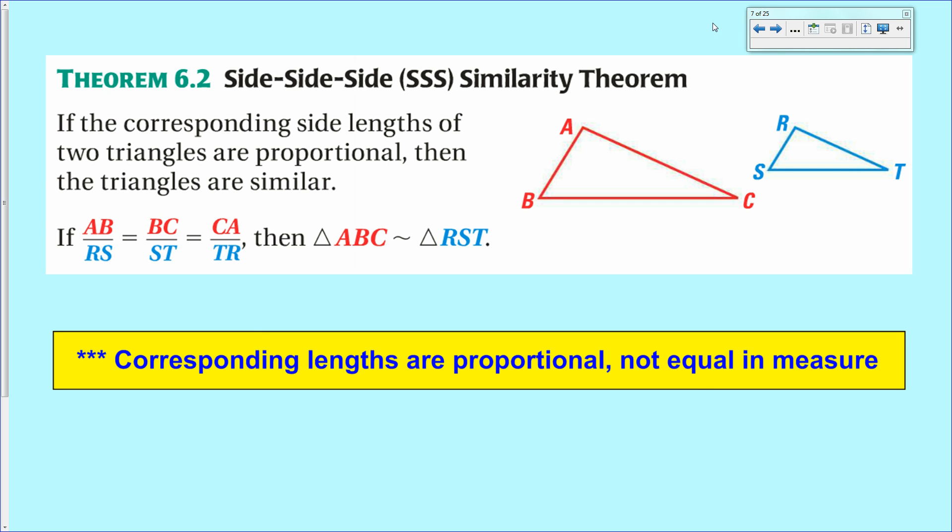So this is what the SSS similarity theorem says. It's written down for you on your theorem sheet. And it says that if you can show that all three pairs of corresponding sides are proportional, that is, they all share a common ratio in the lengths of their sides, then the two triangles are congruent. Now notice that this similarity theorem says absolutely nothing about congruency of the lengths of the sides or the sides themselves. All it says is that the lengths of the sides are proportional.